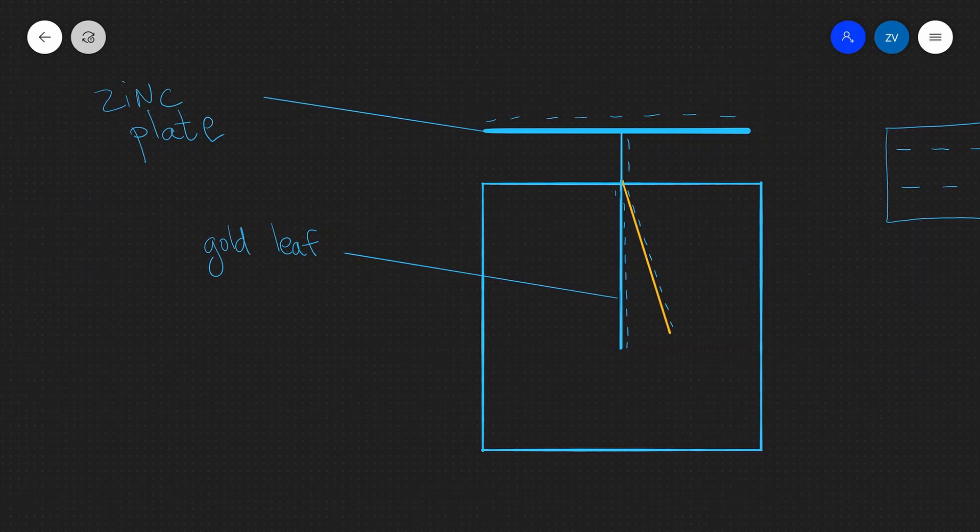Well once the electroscope is charged, what will actually happen is that the gold leaf is going to rise. The reason for that is that there are electrons on the electroscope and also there are electrons on the gold leaf. Now this means that the two electrons are going to repulse. So there's going to be a repulsive electrostatic force, which means that the gold leaf is going to rise. It is exactly the same reason that also causes your hair to rise if you touch a Van de Graaff generator.